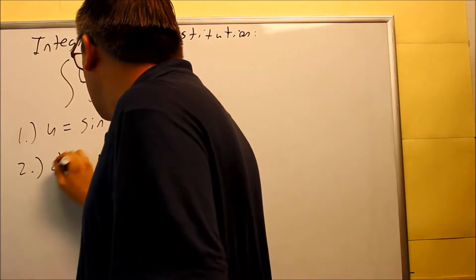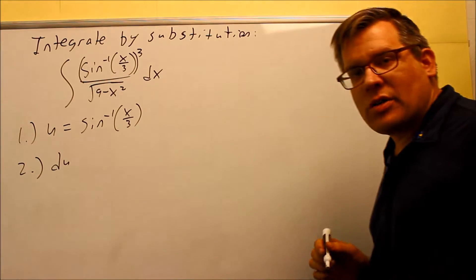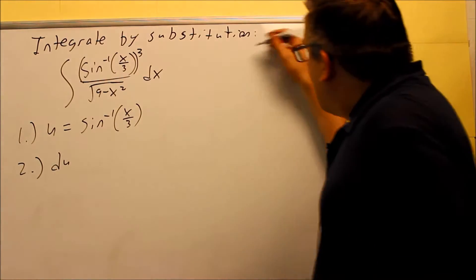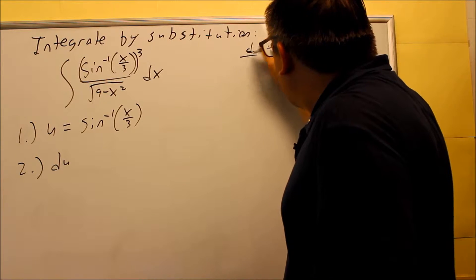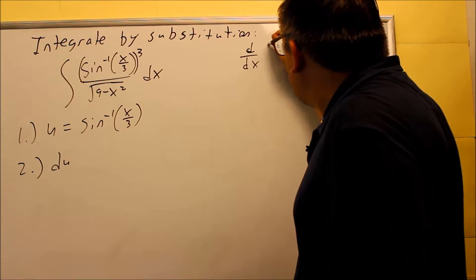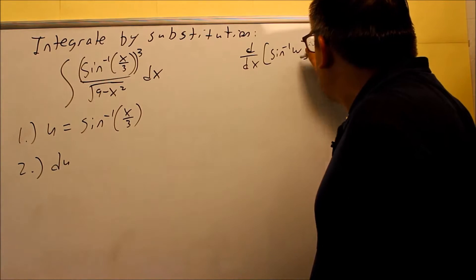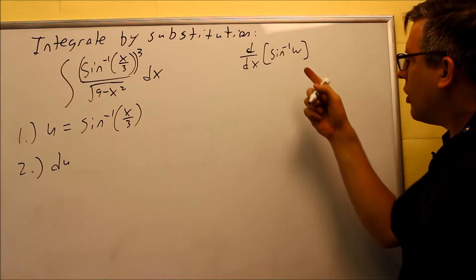Now for step number two, we need to take the derivative of both sides. So the question is, what's the derivative of that? Now this is something that we talked about a long time ago in a previous section. So I'm going to put the formula up here since it's been a while since you may have seen it. So I'm going to do the derivative of inverse sine.